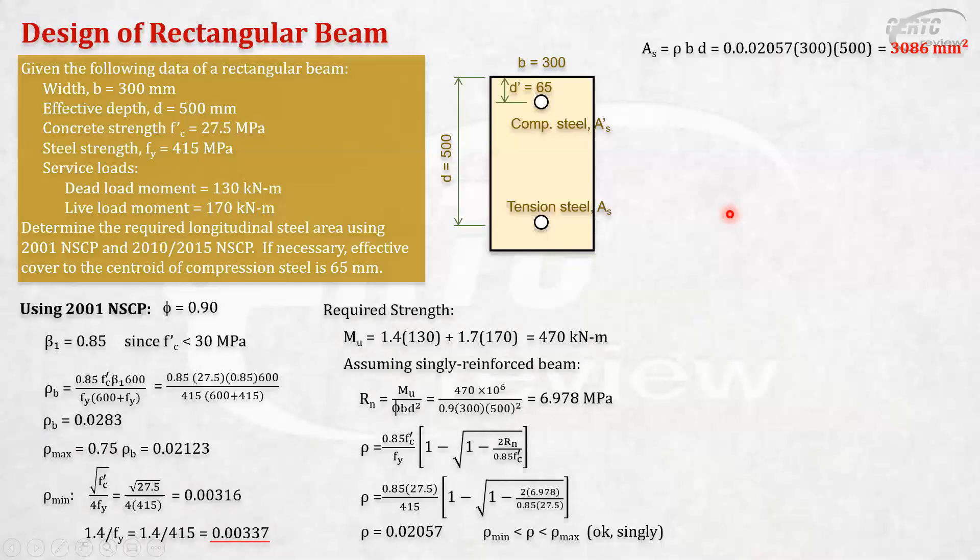Now, let's see what happens with 2010 NSCP. First, our prerequisites, the same beta 1, 0.85 because fc prime is less than 28 MPa. Our rho balance will come up to the same value. Then, our rho min, the same formulas. Our rho min. The same formula. Although, in 2015, it says 0.25 square root of fc prime over fy. That's the same. One fourth is 0.25.